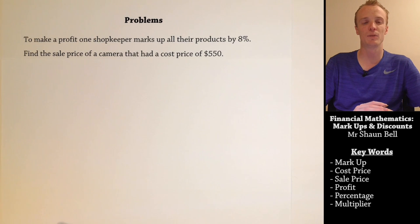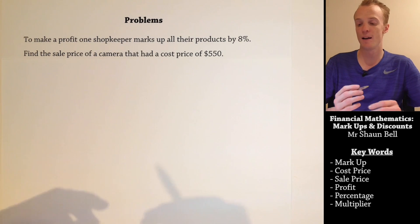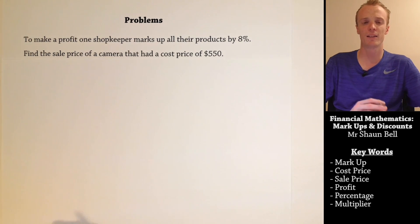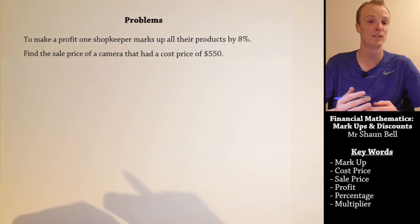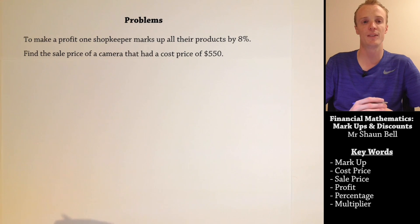Shopkeepers often increase or decrease the price of an item by a percentage. This can be done by using a multiplier. For example, a shopkeeper may wish to apply a markup of 8% to a product that had a cost price of $550 in order to make a profit. Our task here is to find the sale price of this item.